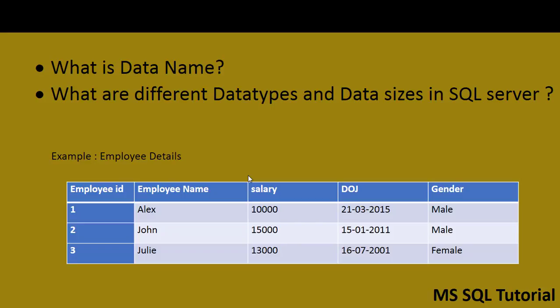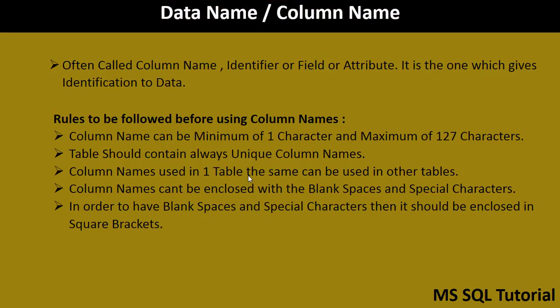Each column in a database table is required to have a column name and data type. The SQL developer must decide what type of data will be stored inside each column when creating a table. The data type is a guideline for SQL to understand what type of data is expected inside each column, and it also identifies how SQL interacts with the stored data.